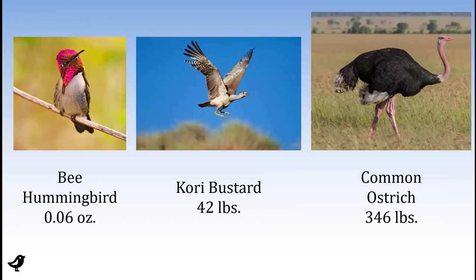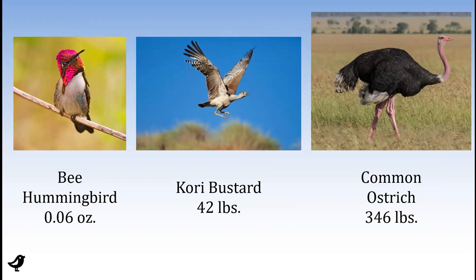We can also look at the array of sizes that occur in birds. The smallest bird in the world is the bee hummingbird at 0.06 ounces — literally the size of a bee. The largest flying bird is the Kori Bustard of Africa at 42 pounds. And then the largest living bird, the common ostrich — the biggest one ever weighed came in at 346 pounds. The tremendous variety in sizes just shows again how much evolutionary variation there has been in this group of animals.